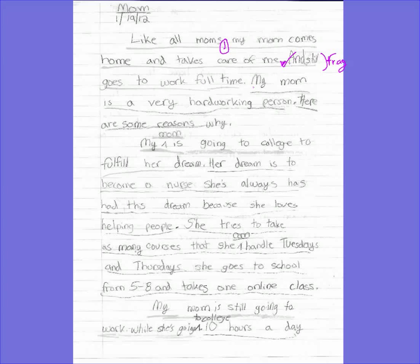Let's see the next sentence: 'My mom is a very hardworking person.' Nice thesis statement — very clear. It could be better; there could be some richer vocabulary in there and it could be a little more creatively written, but it's very straight to the point. 'Here are some reasons why.' Got a plan coming up next — that's perfect. And then an indent. Nice intro paragraph there, and we're moving on to the first body paragraph.